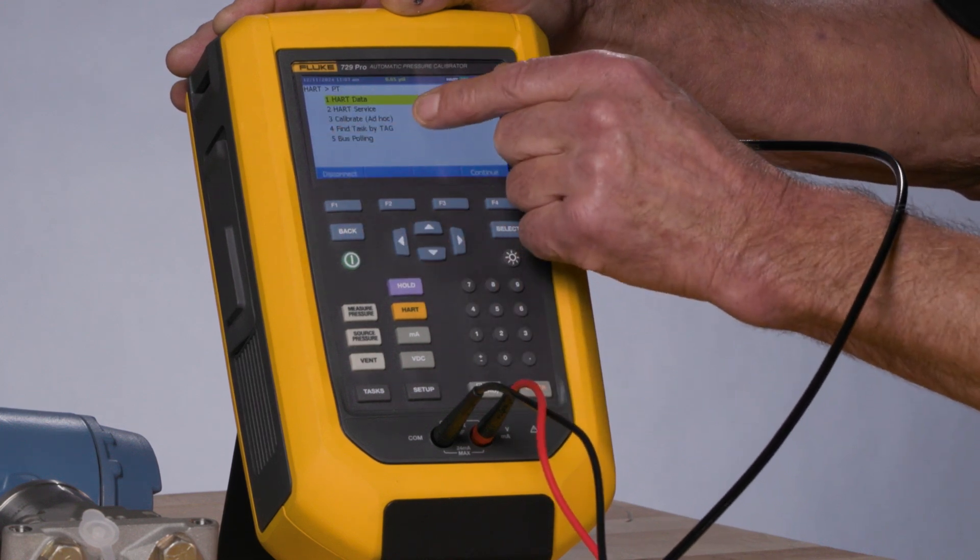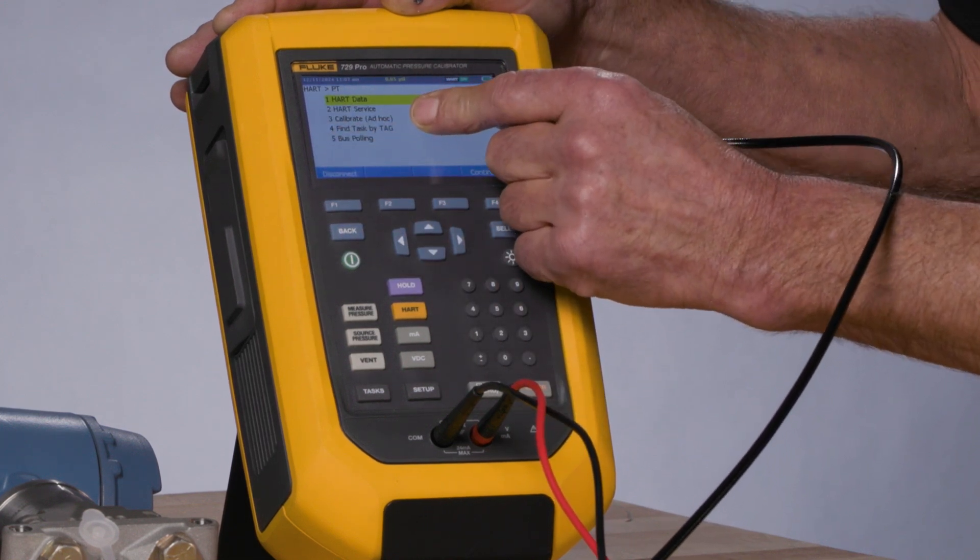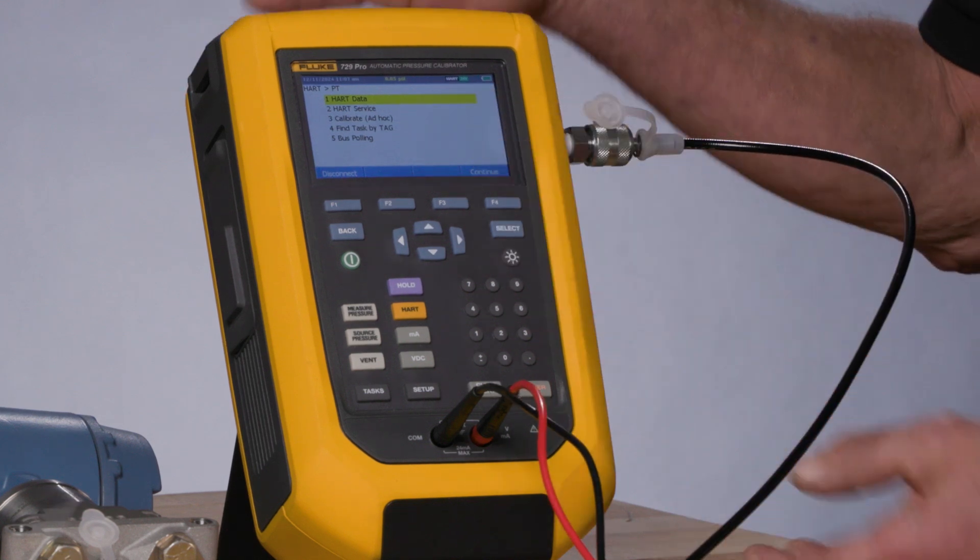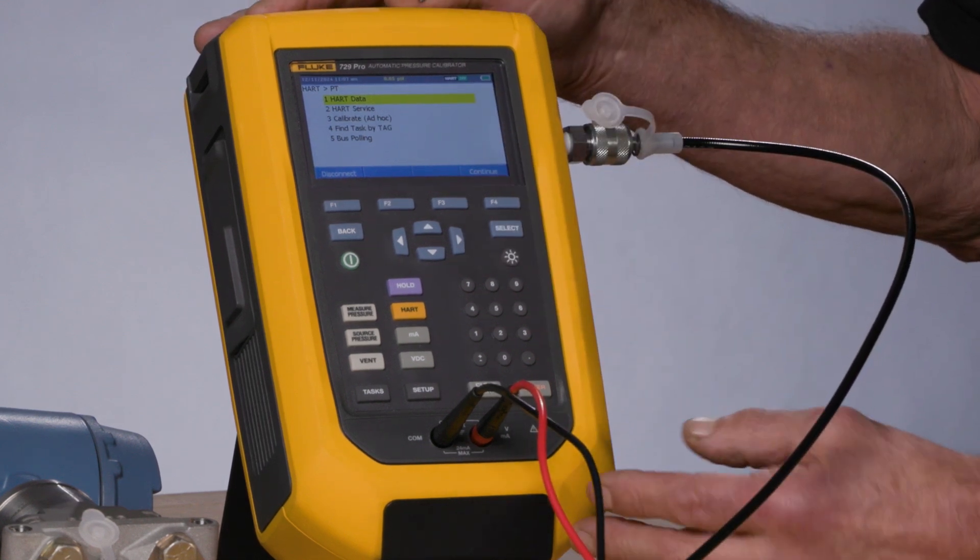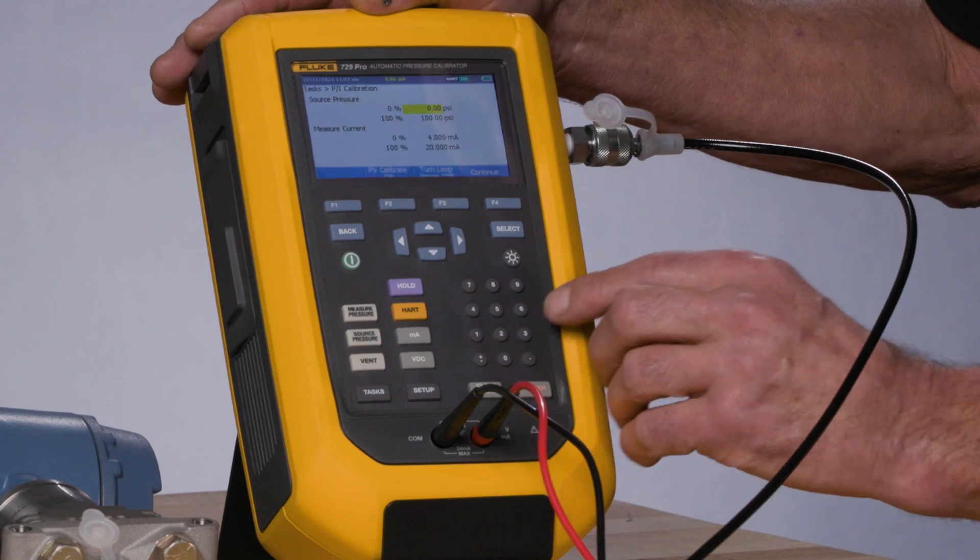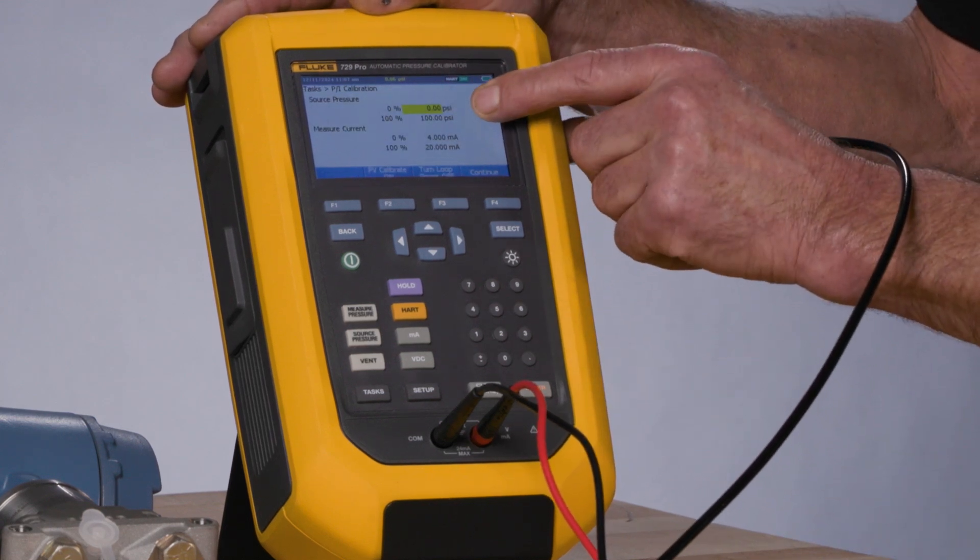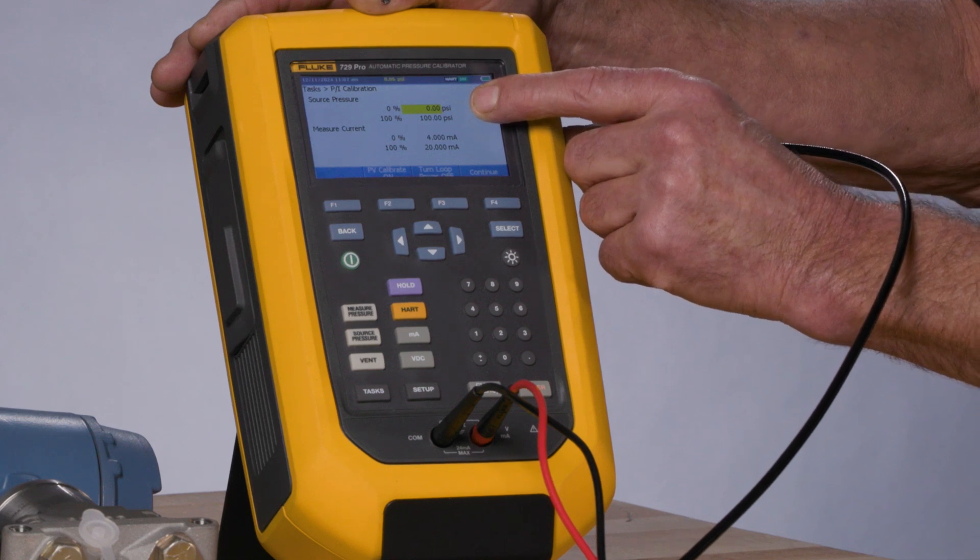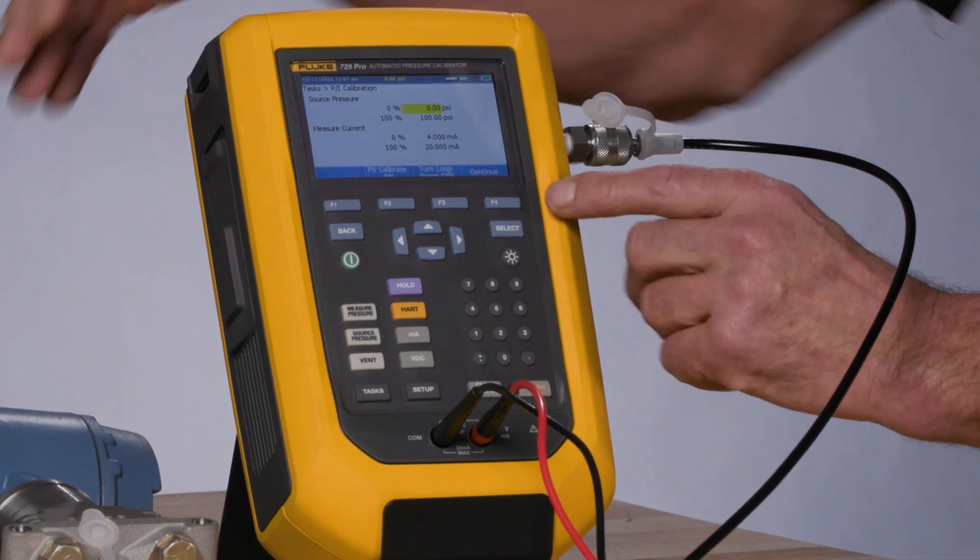Select back, and now the next option, calibrate ad hoc. We'll use that device configuration to pre-configure the calibrator for the calibration test. So I select 3, and I notice it's automatically set up to calibrate 0 to 100 psi based on the HART configuration of this particular device.